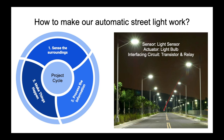In this case, our actuator is the light bulb. For the second step — processing the information — that serves as a connection between the first step and the third step, between the sensing part and turning the light bulb on or off. Between the sensor and the actuator, there will be a circuit, basically known as an interfacing circuit, which is made up of a transistor and a relay. So these are the three things in a basic automatic street light project: the sensor, the actuator, and the interfacing circuit — which are the three basic things present in each and every electronic project. We will be discussing the sensor, actuator, and interfacing circuit more in coming videos.